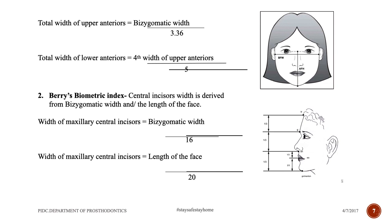Dividing Berry's index result by 2 gives the width of one central incisor. The width can also be determined by the length of the face — from the hairline to the tip of the chin — divided by 20. However, this method is not reliable in edentulous patients because the lower face tends to collapse, causing variation in facial length.